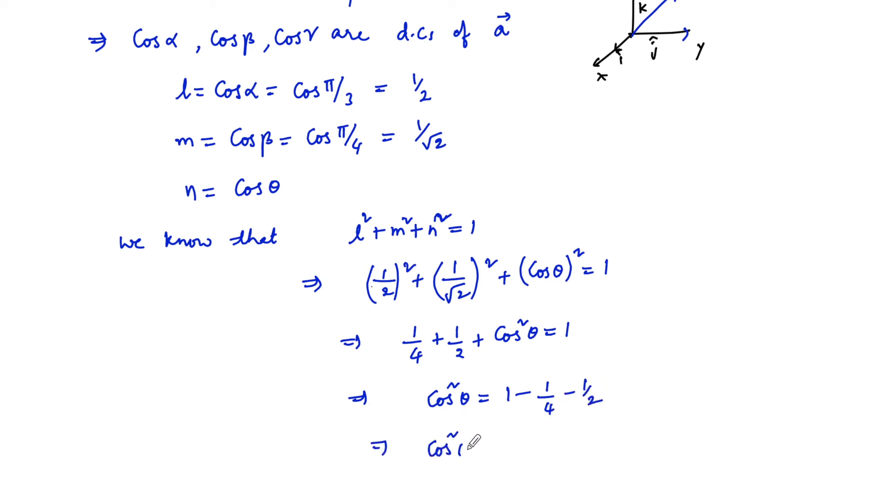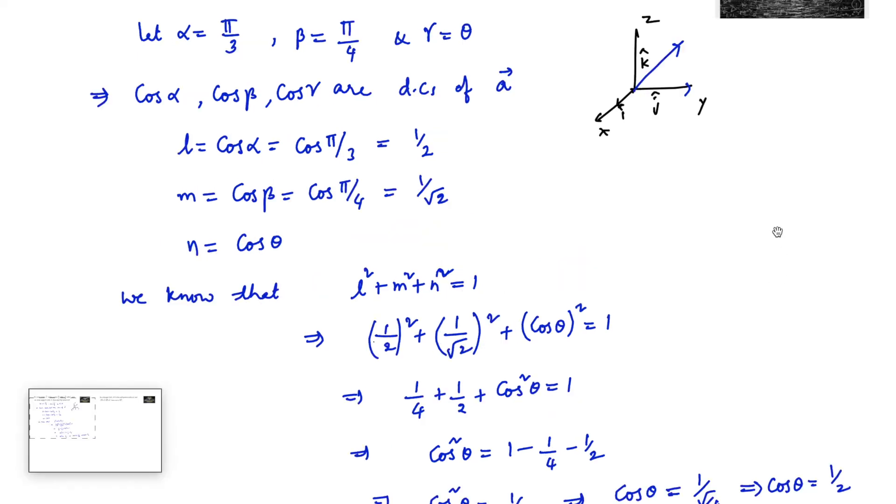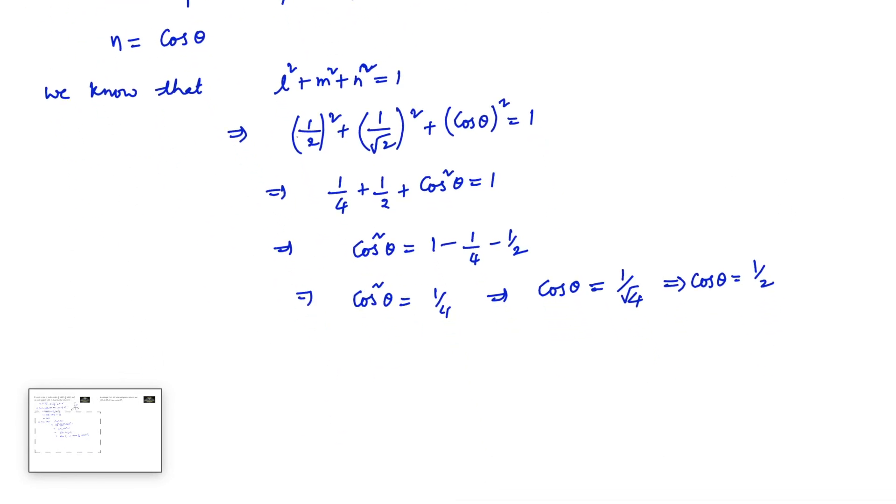So, cos²θ = 1 - 1/2 = 1/2, minus 1/4 = 1/4. And so, cos θ = 1/√4 = 1/2. Since θ is an acute angle, we consider the positive value. Therefore, cos θ = cos(π/3), which is 1/2. So, we can say that the acute angle is 60 degrees or π/3.